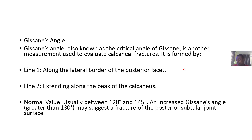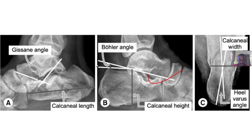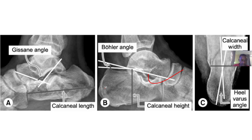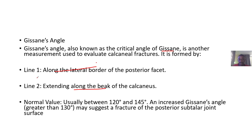Gissane's angle is also known as the critical angle of Gissane. It is another measurement used to evaluate calcaneal fractures. It is formed by two lines: the first line runs along the lateral border of the posterior facet, and the second line extends along the beak of the calcaneus.